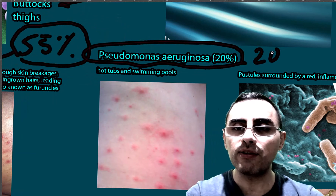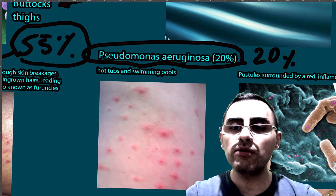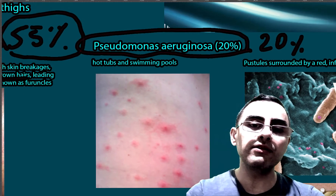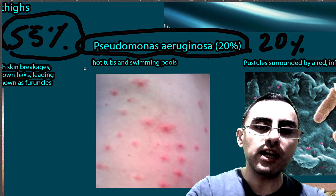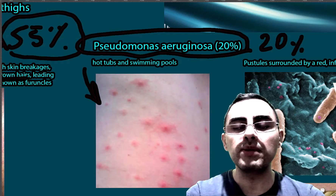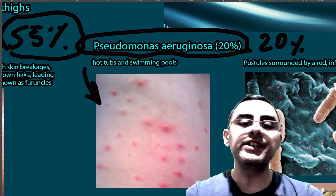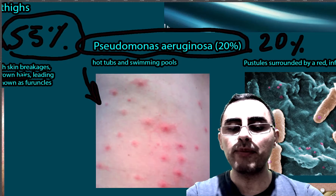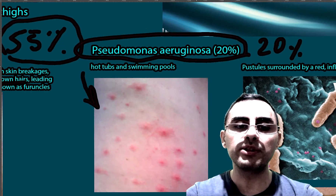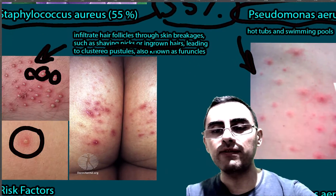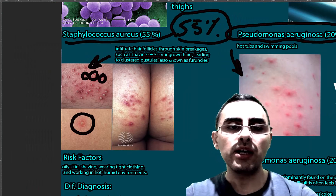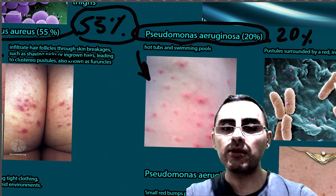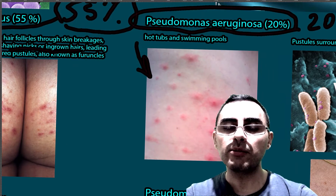The second most common cause of folliculitis is Pseudomonas aeruginosa — also a bacteria — causing folliculitis in 20% of cases, making it also a common problem. Pseudomonas aeruginosa usually comes from hot tubs or swimming pools because this bacteria can survive in hot water, which is why it can affect people using hot tubs.